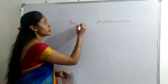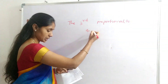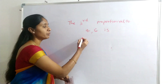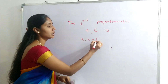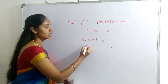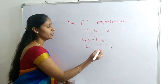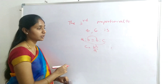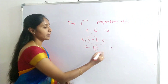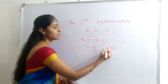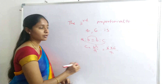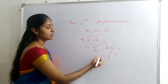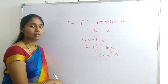Next question: The 3rd proportional to 4 and 6 is what? From proportion, A:B = B:C, so C = B²/A. Here B = 6 and A = 4. So C = 6²/4 = 36/4 = 9. The 3rd proportional value is 9.